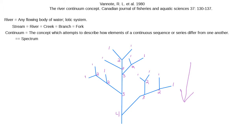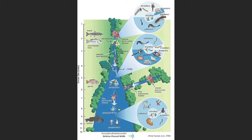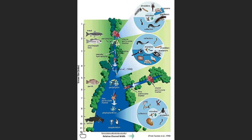As the stream order number gets larger, we expect the stream to get larger — that's an important concept giving us an idea of stream magnitude. This image from Van Oat et al 1980 is one of the original diagrams from his publication. On the y-axis we see stream size or order from first to twelfth, and along the x-axis we see relative channel width. First order streams are very narrow, while a twelfth order stream is very wide.